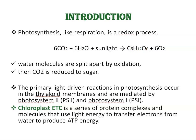The primary light-driven reactions in photosynthesis occur in the thylakoid membrane and are mediated by photosystem II and photosystem I. Chloroplasts use light energy and a linear electron transport pathway for the generation of NADPH and ATP. However, the production ratio of ATP to NADPH is usually less than required to fulfill the energetic needs of the chloroplast. The products of the light reaction — NADPH and ATP — are used up by the enzymes of the carbon dioxide assimilation cycle, which is localized in the stroma part of the chloroplast. So, the chloroplast ETC is a series of protein complexes and molecules that use light energy to transfer electrons from water to produce ATP energy.